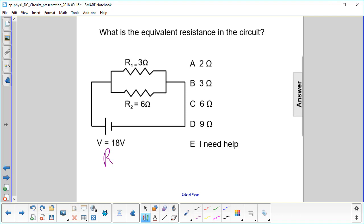We're in parallel because the current leaves here and some will go this way, some will go this way, so it breaks up. That tells you you have a parallel condition. So we have one over equivalent resistance is one over R1 plus one over R2.